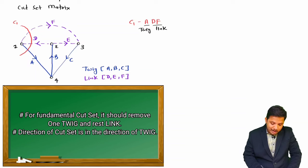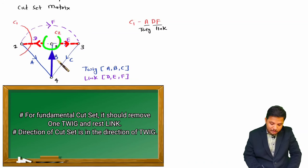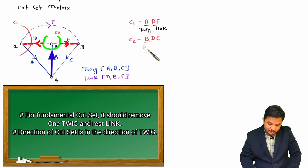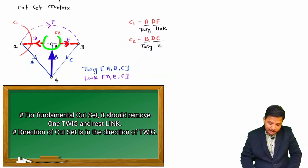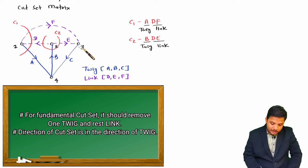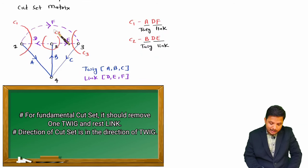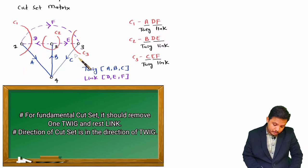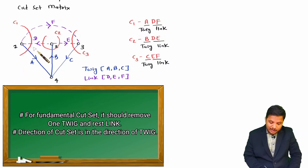For cut set C2 with twig B, it contains one twig B and links D and E. For cut set C3, we have one twig C and links E and F. This is the standard process of identifying fundamental cut sets — each twig in the tree corresponds to one cut set.